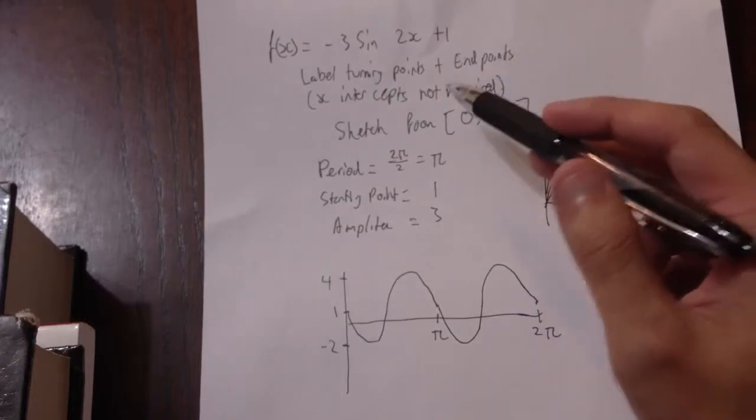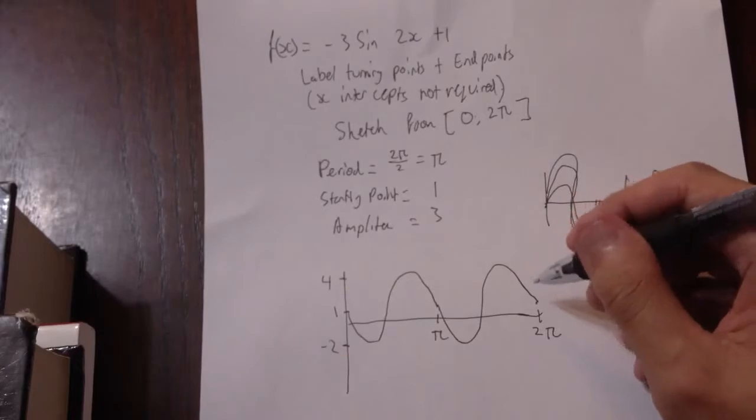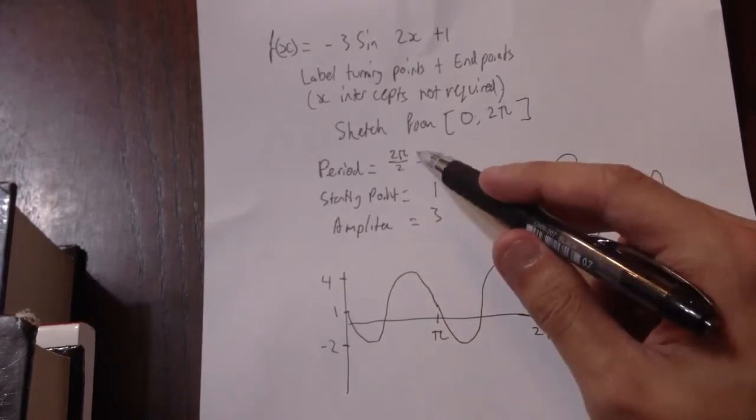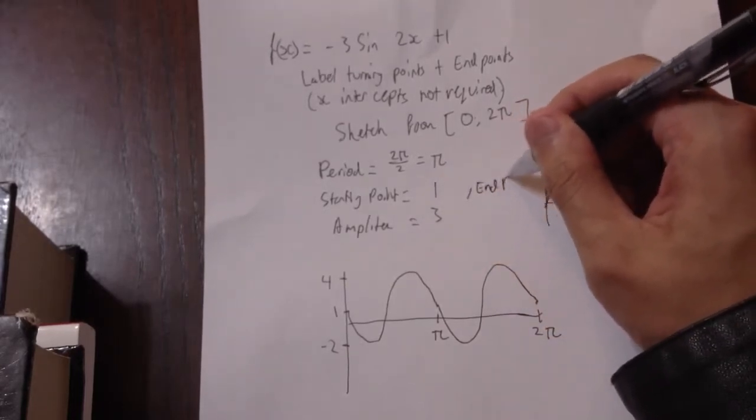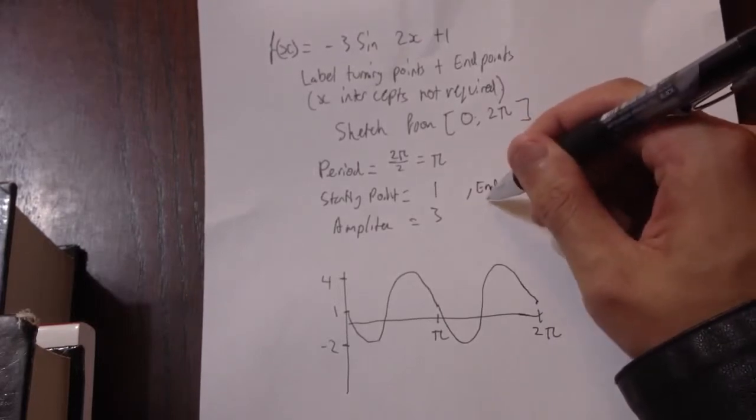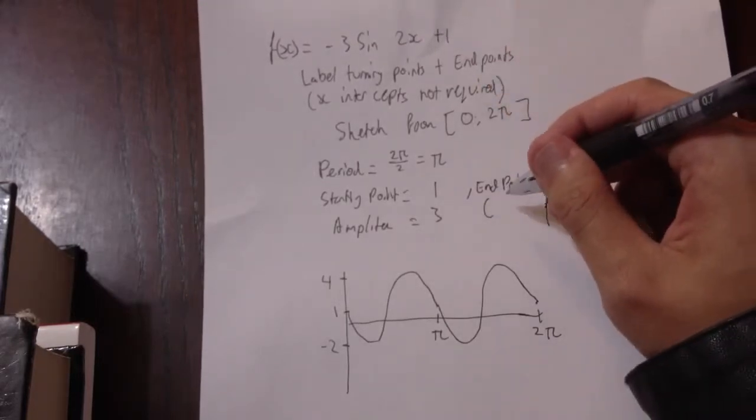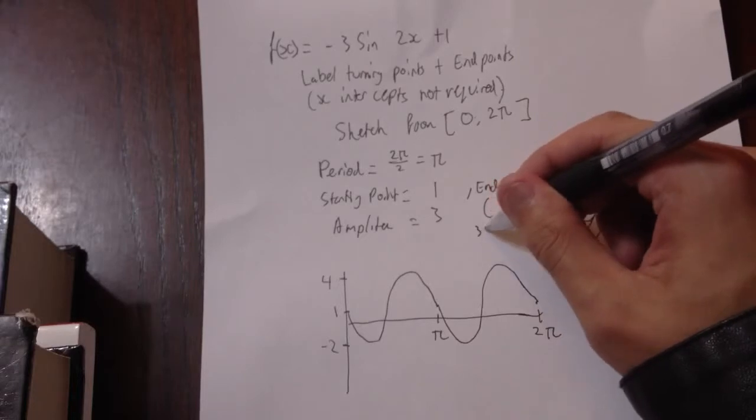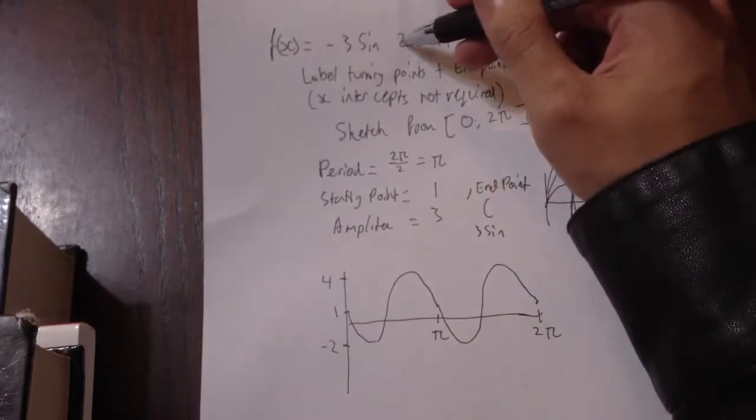Now it says label all the turning points and endpoints. So the endpoint, we know it's two periods. We could probably figure out what the endpoint is as well. We do that by subbing in 2π into that.